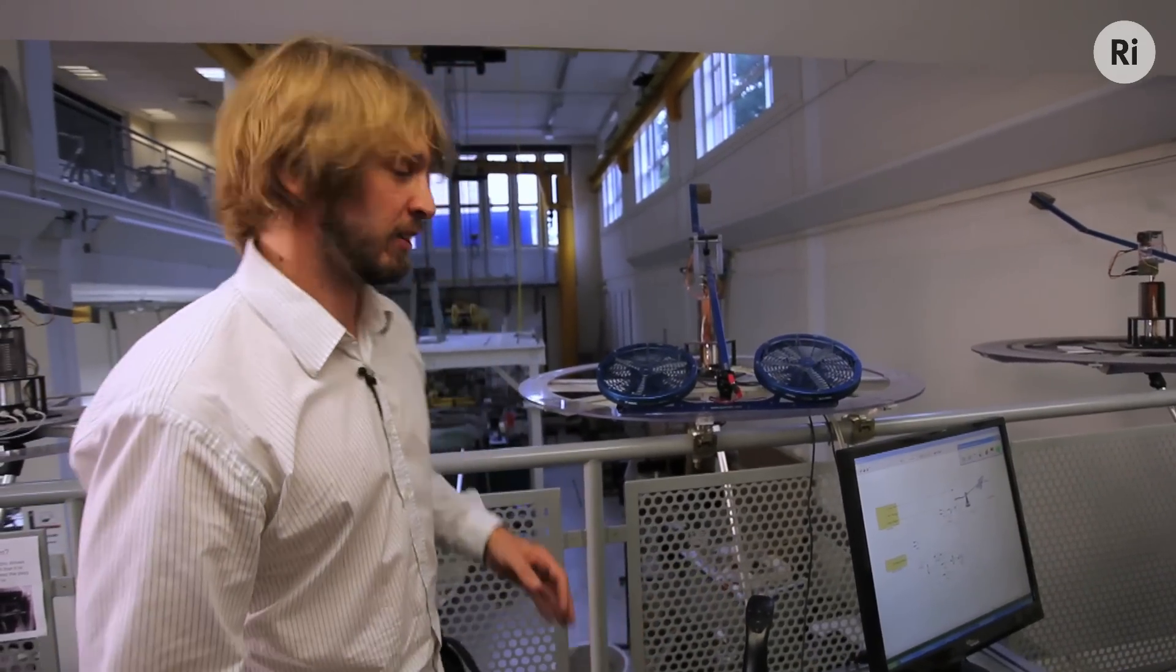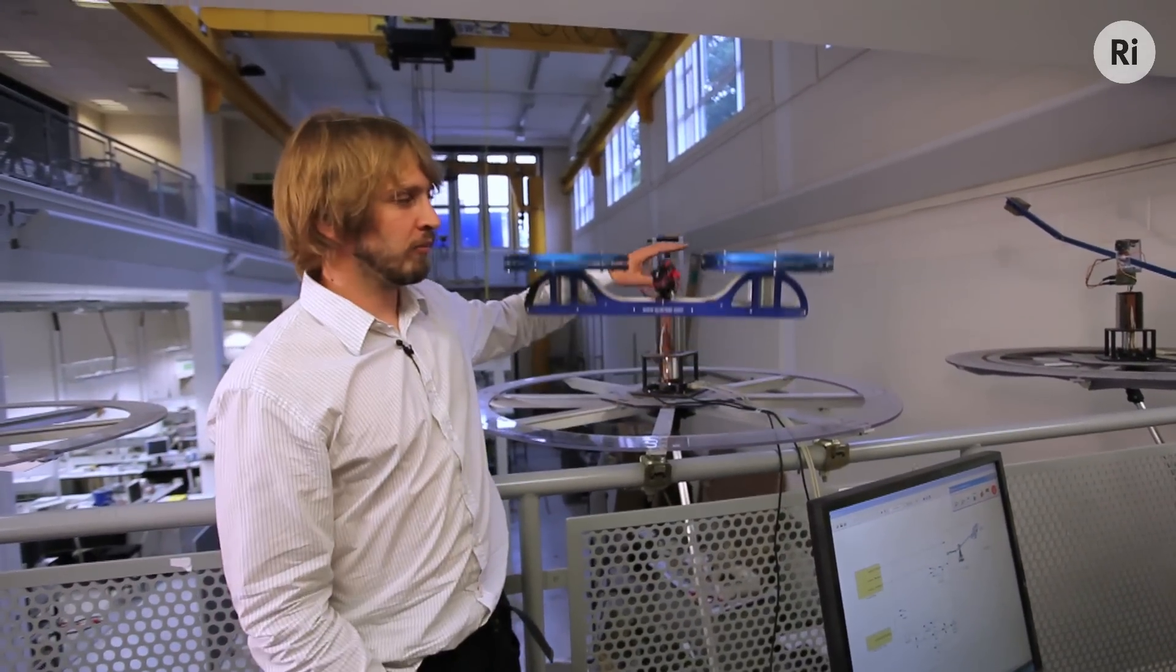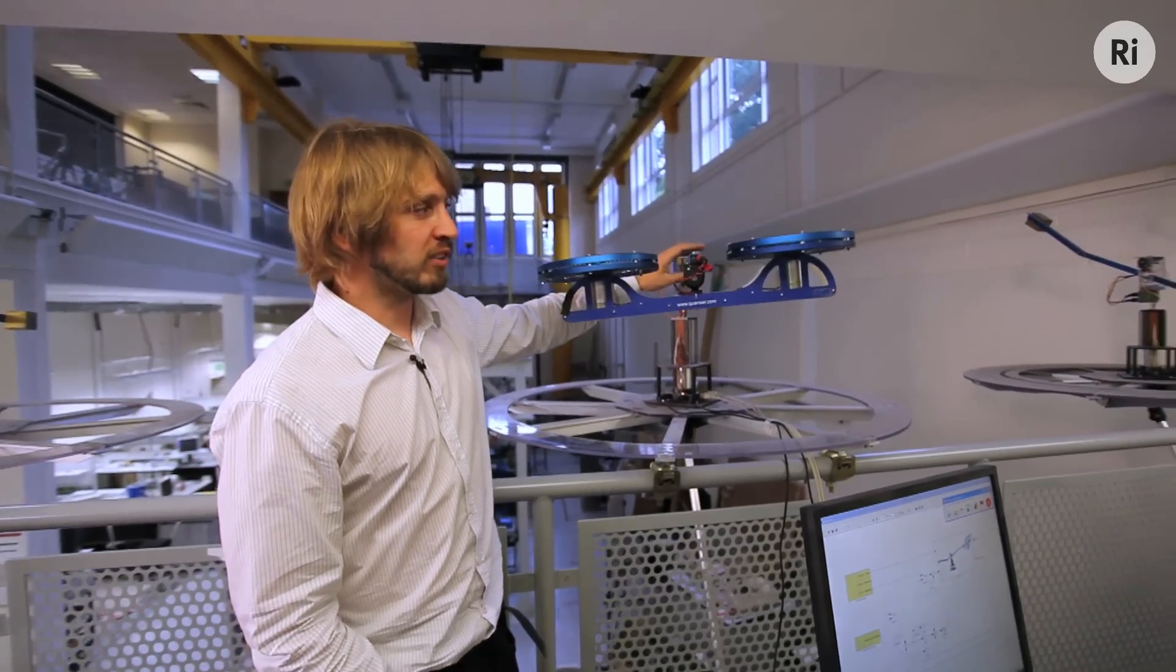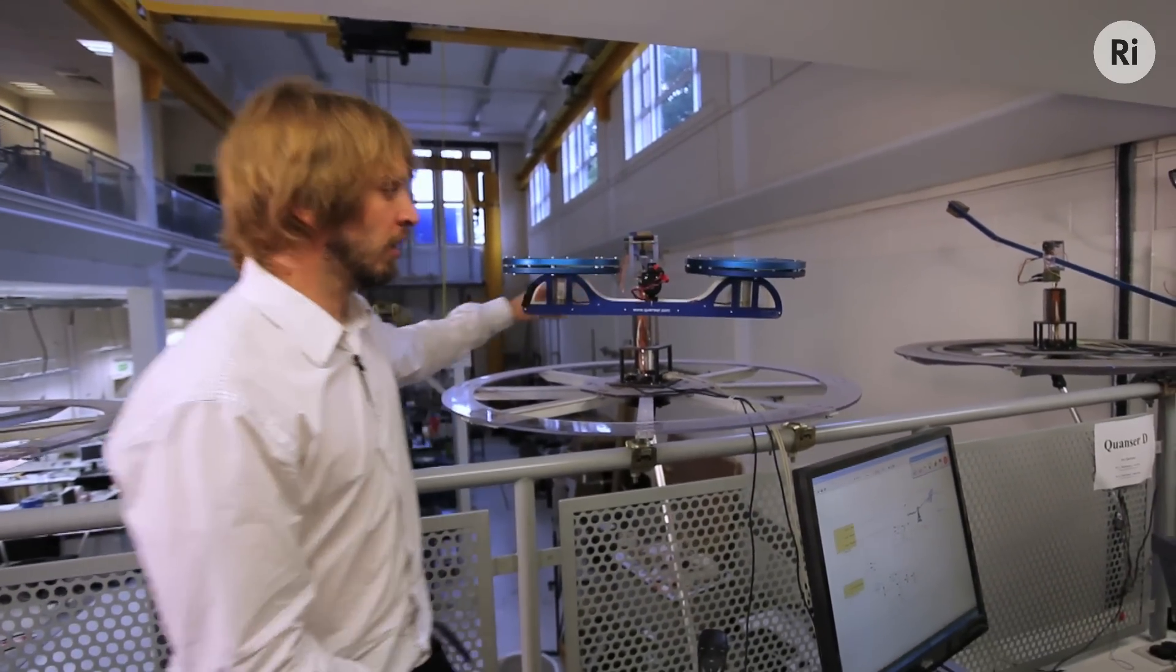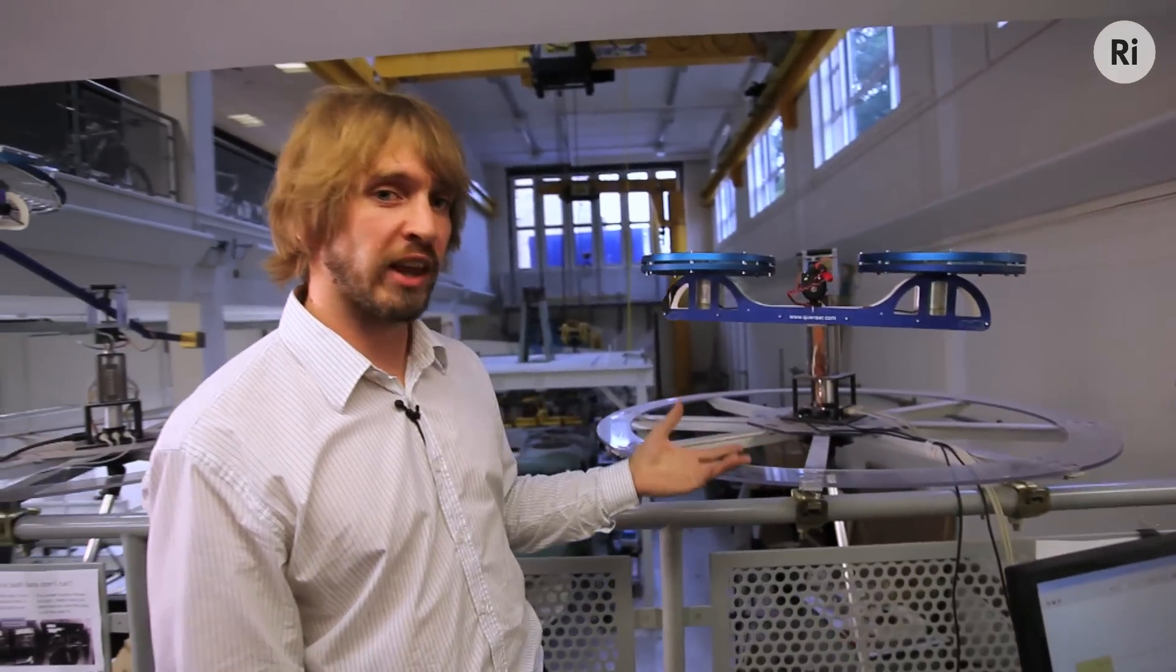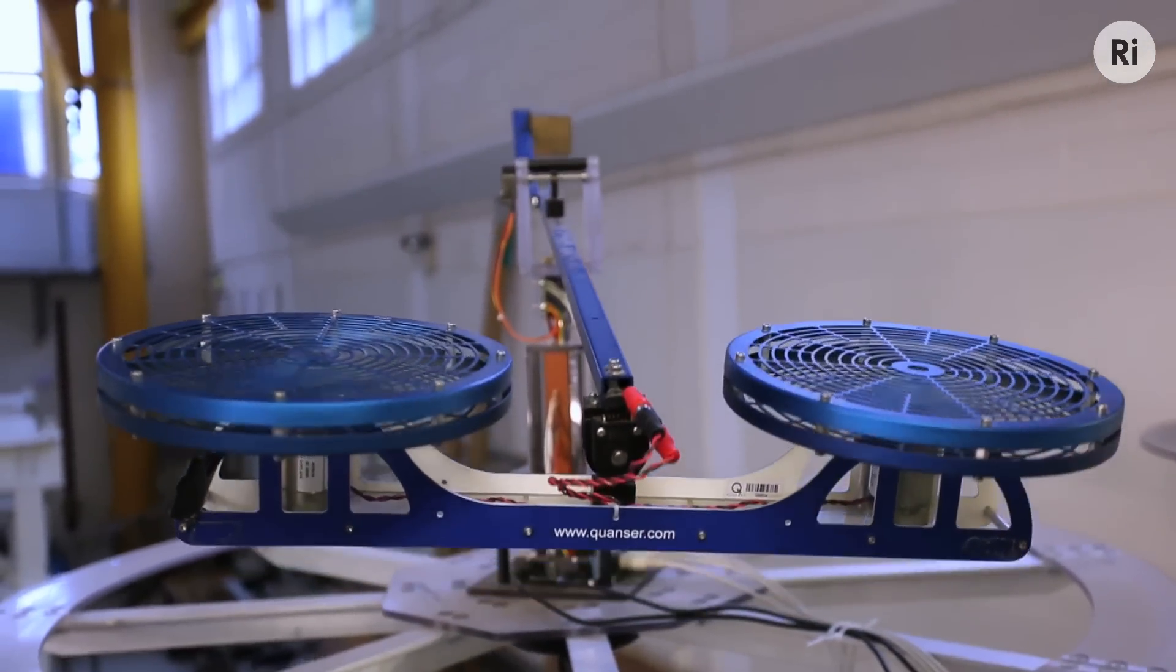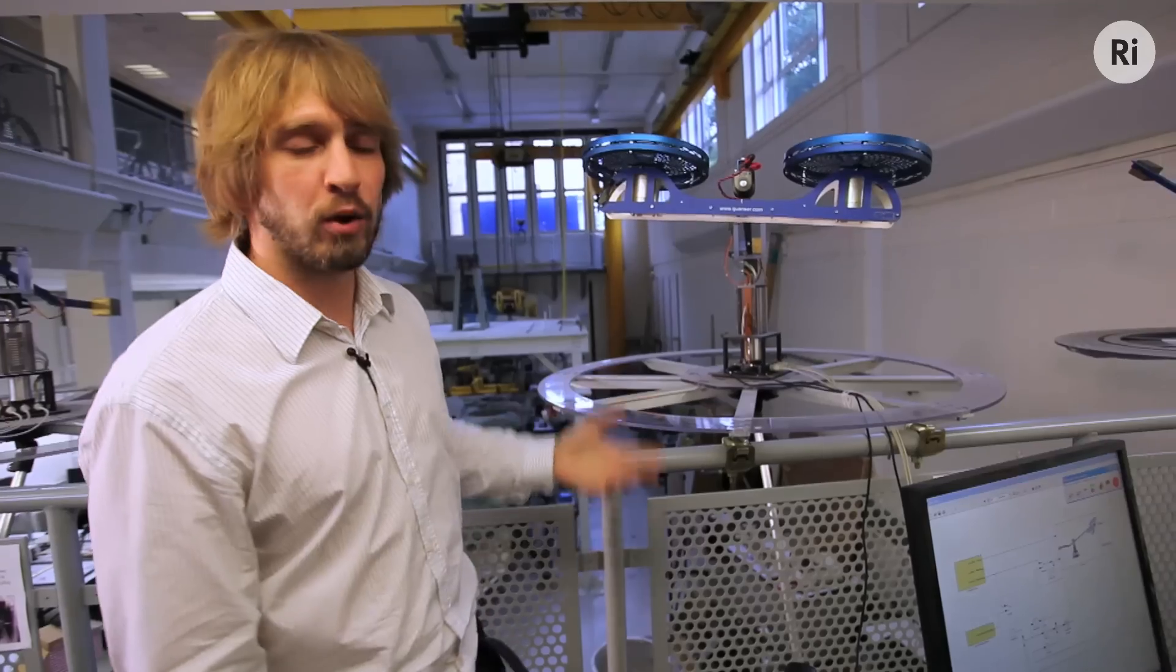So first we're going to take a look at open loop control systems without any feedback. This is effectively a remote control helicopter. And we're just going to look at the elevation control. So what we're controlling is the fan speed. Now it's inherently a stable system, so I can let it go like this and it'll stay put. But if I give it a little nudge, then it'll start oscillating and it'll take a while to settle down to that stable position again.